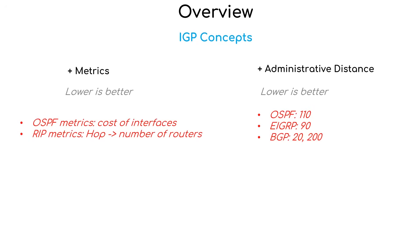Today we also cover the concepts of metric and administrative distance. A routing protocol selects the best route to reach the destination using a metric. A route with a lower metric is the best route. Each routing protocol has a different metric calculation. For example, OSPF metric is the sum of all interface cost settings along the route — and how cost calculation works will be explored in the next videos. EIGRP uses bandwidth and delay, while RIP uses hop count, which is the number of routers between the source and destination.